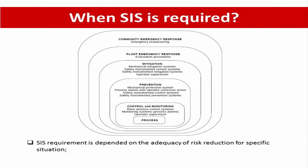When is SIS required? SIS requirements depend on the frequency of risk reduction for specific situations. The main concept of necessary risk reduction is the reduction in risk that has to be achieved to meet the tolerable risk or process safety target level for a specific situation. The necessary risk reduction may be achieved by either a Safety Instrumented System, other protection layers, or even a person as an integral part of the safety function. For example, an operator can be alerted by a process alarm and perform a safety action based on that.